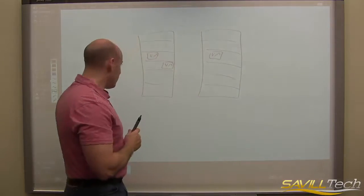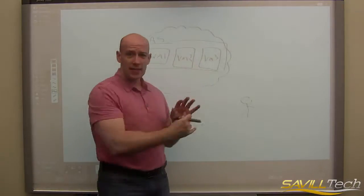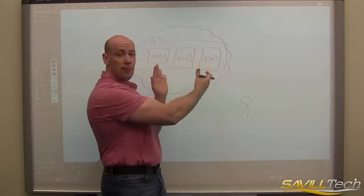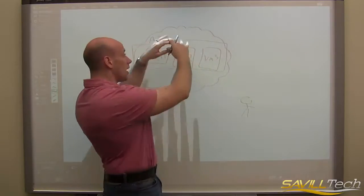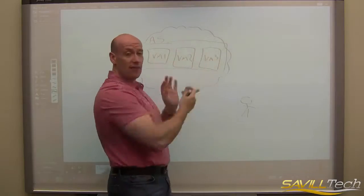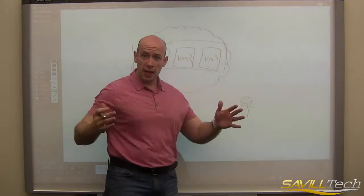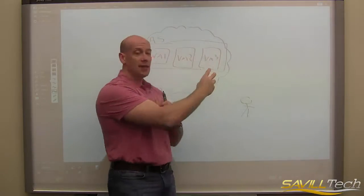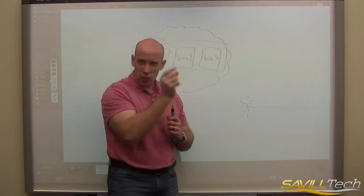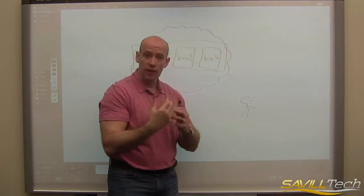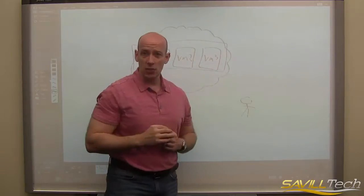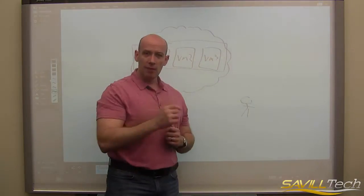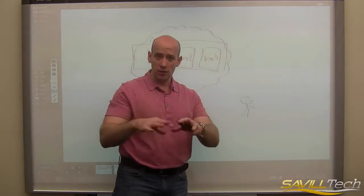So that's the high-level overview. You pre-create all the VMs and put them in an availability set. At the cloud service level you configure the availability set to do the scaling. When it doesn't need VMs it shuts them down and deprovisions them so you're not paying, and then it starts them as needed and stops them when they're no longer required. Now let's go look at this in action in an environment.